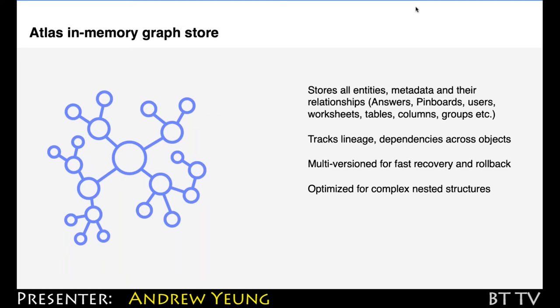Working together with this in-memory calculation engine in Falcon is an in-memory graph database. What this does is it stores all of the underlying entities and their metadata, as well as relationships across all of them. Now, all of this data and all of their metadata are represented within this graph store.